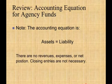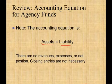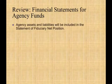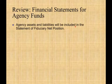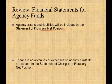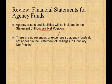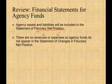Remember the accounting equation: assets equal liabilities, and agency funds have no expenses and no revenues. There is no net position. If assets equal liabilities, you have no net position, no net fund, no equity — nothing like that. Closing entries are not necessary for an agency fund because you don't have revenues or expenses. At the end, the financial statement is a statement of fiduciary net position — basically like a balance sheet. Assets equal liabilities. That's it.